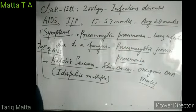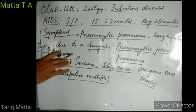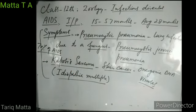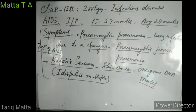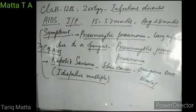Pneumocystis jirovecii is present in the soil, and almost every person is infected by this fungus as it enters the lungs with dust and dirt. But our immune system suppresses this fungus, keeping it in control so that it doesn't develop any lung infection in normal people. However, in those persons suffering from lack of immunity, this fungus overpowers them, occupies the whole lungs, and causes Pneumocystic Pneumonia.